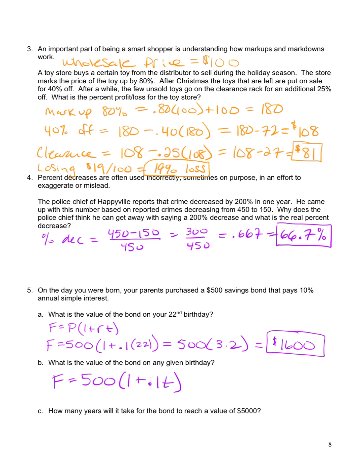And part C, how many years will it take for the bond to reach a value of $5,000? So my future value now is going to be 5,000. So I'm going to put that in for F. P is 500 times 1 plus my interest rate of 0.1 T. And now I just need to solve this equation for T. I'm going to start by distributing my 500 to each term in my parentheses. So I have 5,000 equals 500 plus 50 T. And then I'm going to subtract 500 from both sides so that I have 4,500 equals 50 T. And then divide both sides by 50. So 4,500 divided by 50 is 90. So 90 years.